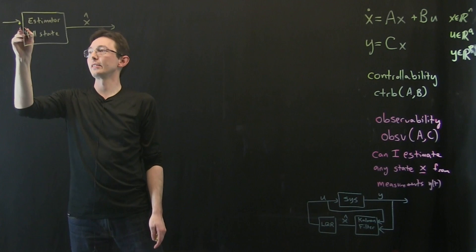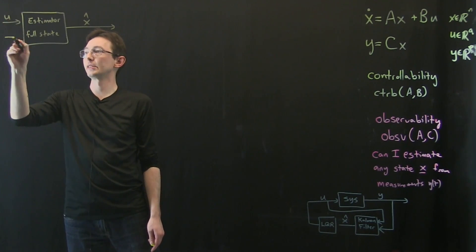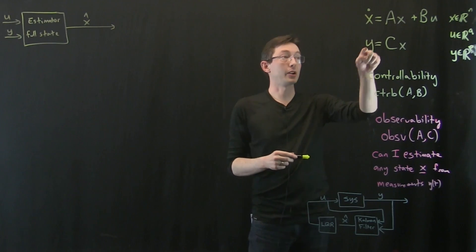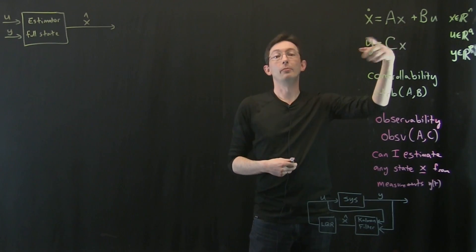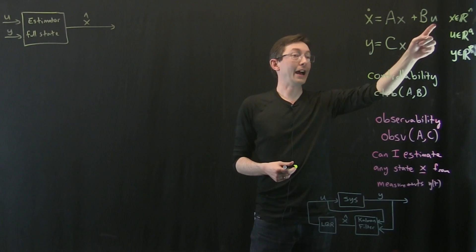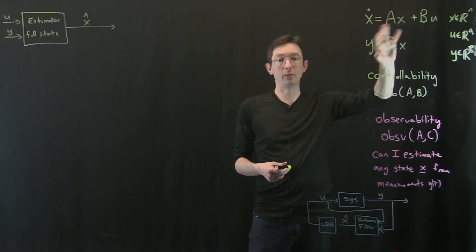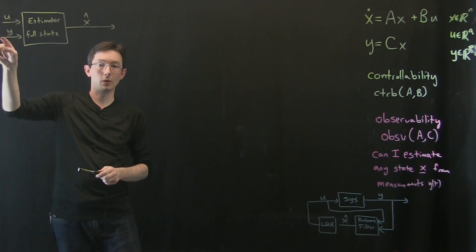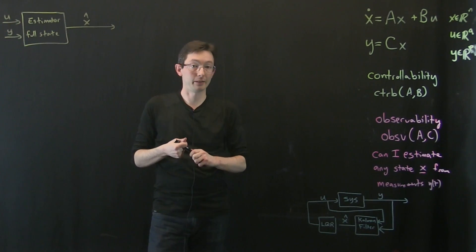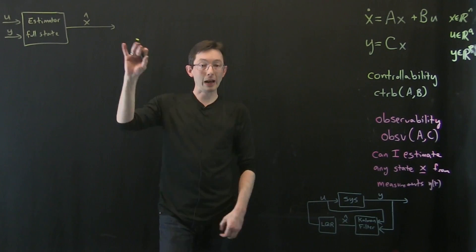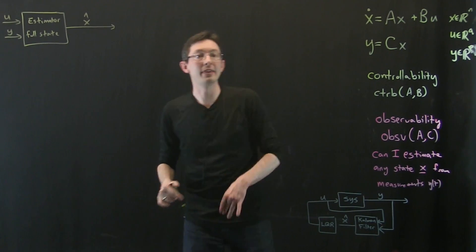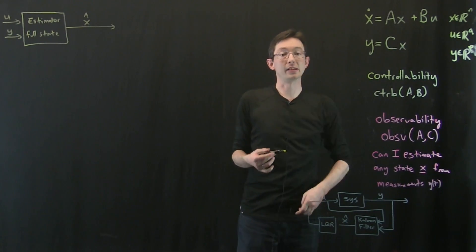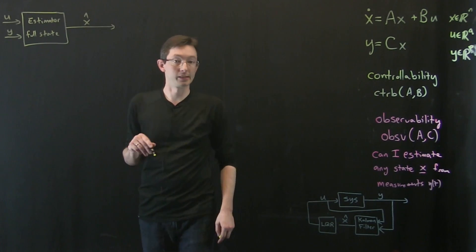According to this diagram, the output is going to be X hat, the full state estimate, and the inputs to this thing are my control inputs U and my measurements Y. I measure the system and I'm trying to back out X, but in addition, I have to know how I'm kicking the system so I can disambiguate that effect of the input. I'm going to write down what the system is, and then we're going to figure out how to optimize it given that there might be some disturbances and noise in the system.